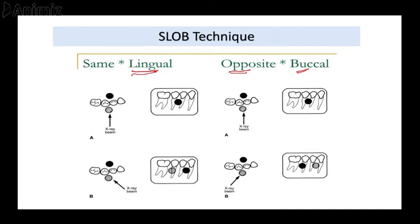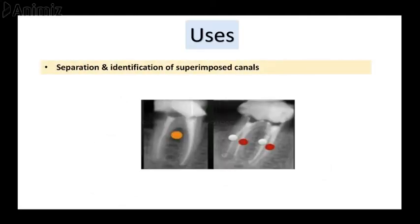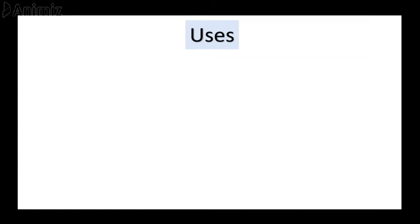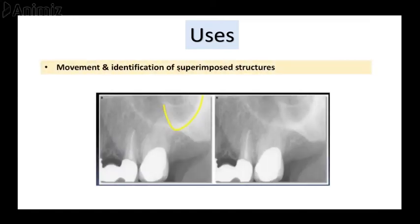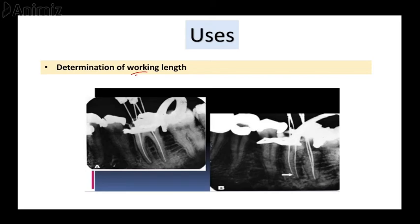The SLOB technique is mainly used in separation and identification of superimposed canals, and in movement and identification of superimposed structures. In maxillary radiographs, many structures are superimposed, such as the floor of the maxillary sinus and the zygomatic arch. The SLOB technique also helps in determination of the exact working length in endodontic procedures.